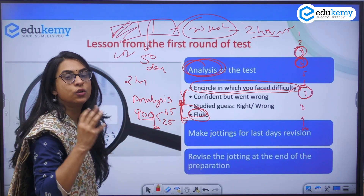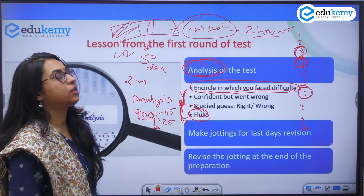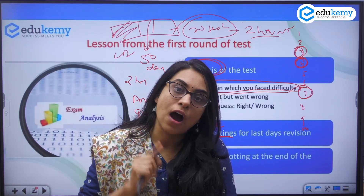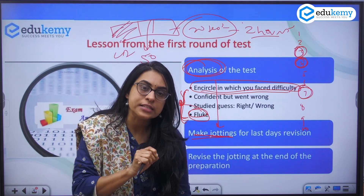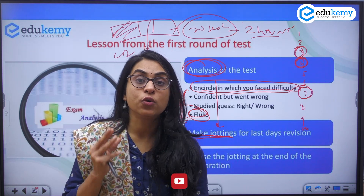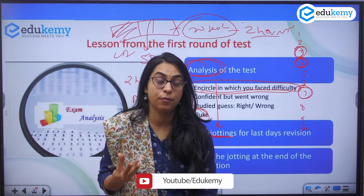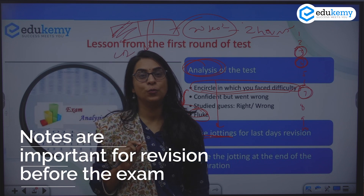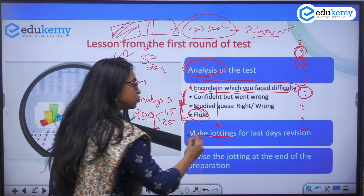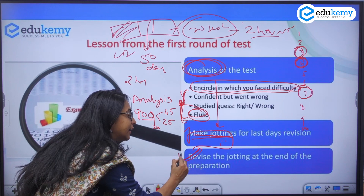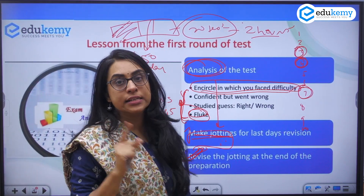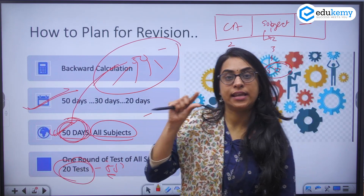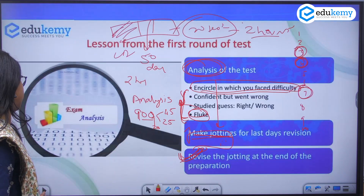Once you have analyzed the test, got your marks, and understood your accuracy, make some jottings. The test is completed only when after the two hours you sit with the solution, read it, and write some key points from those solutions in a register. What you revise in the last few days before your prelims examination should be this register — where you've recorded what went wrong and which confident questions you didn't do properly. This is the first phase: 50 days of revision, current affairs, solving 20 tests, analyzing them, and writing notes in the register.